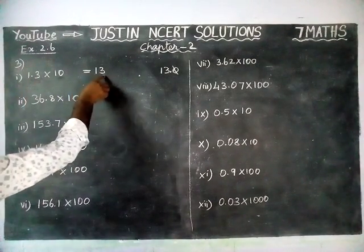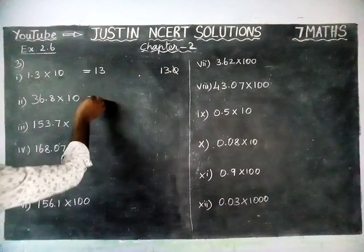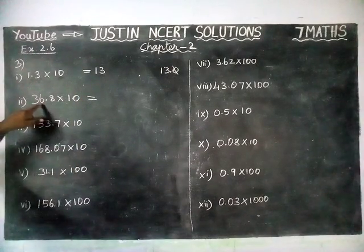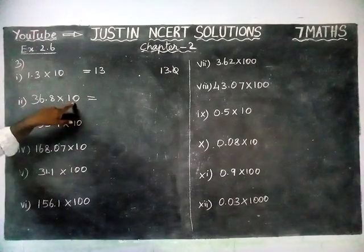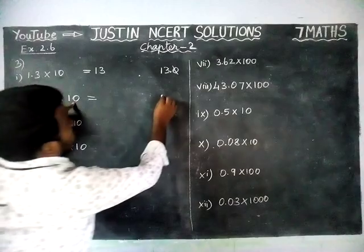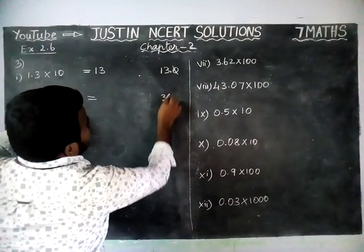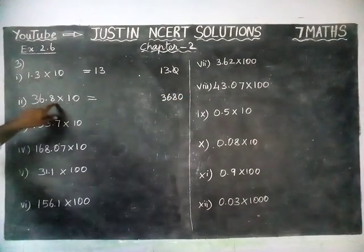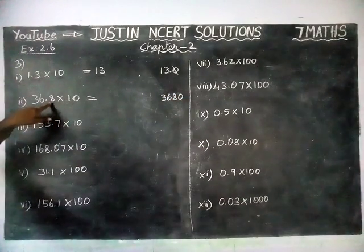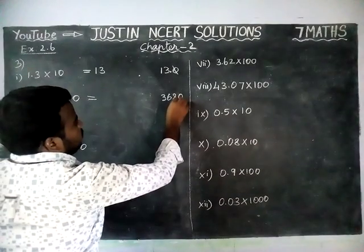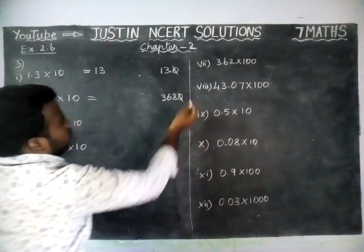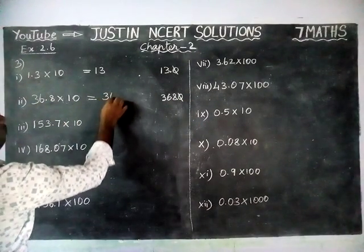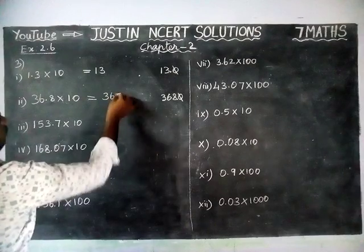So the answer is 13. Now, 36.8 into 10: 368.0 will come. Here we have one decimal point, so the zero will be cancelled. So the answer is 368.